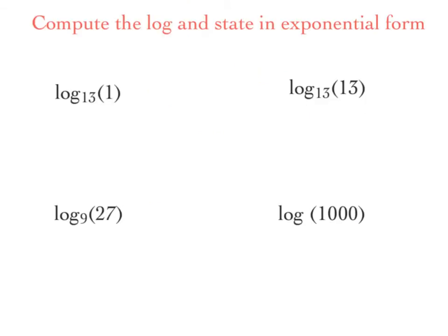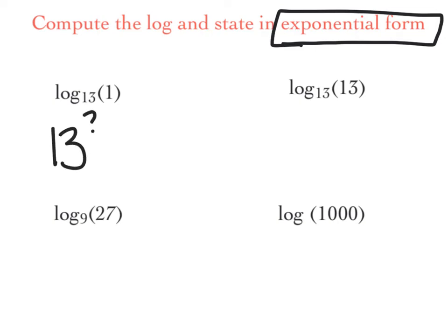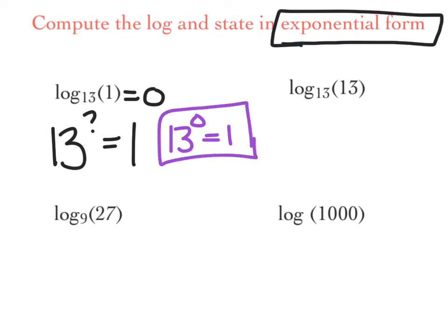Compute the log and state an exponential form — so we're going to do two things. Exponential form means — well, this is log form because you see a log. Exponential form is going to have an exponent. So let's first compute the log: what power of 13 is 1? I know anybody to the 0 is 1, so that exponent must be 0. Log base 13 of 1 equals 0. Now state an exponential form: 13 to the 0 equals 1. Basically, exponential form has an exponent, log form has a log.